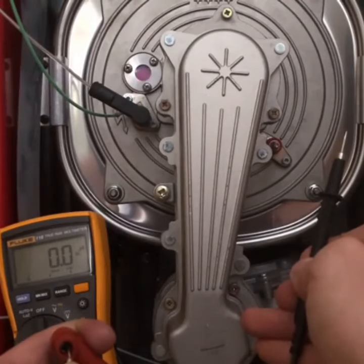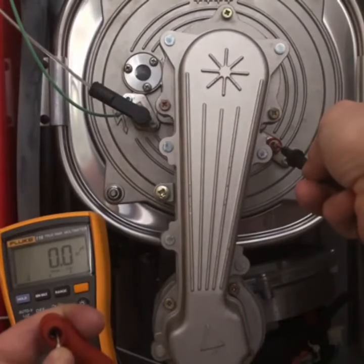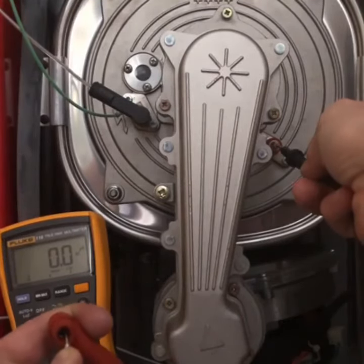If you're not getting the readings you expect, it could be that the flame sensor is faulty or that it's a bit dirty and it's insulated itself so it's not getting the proper readings.